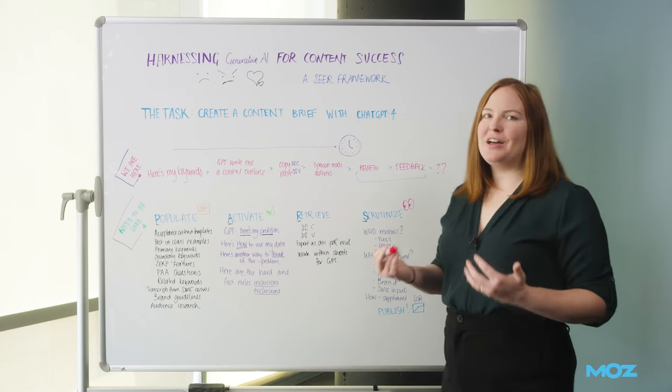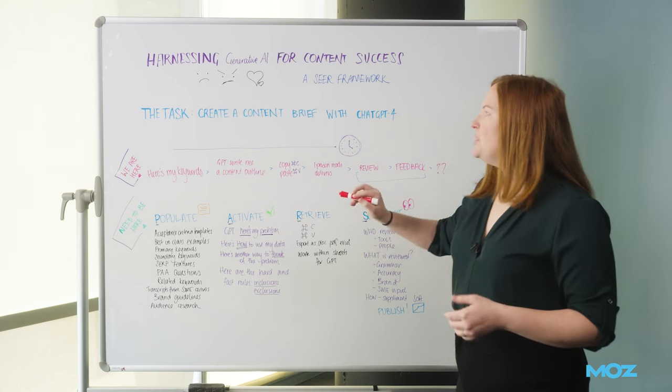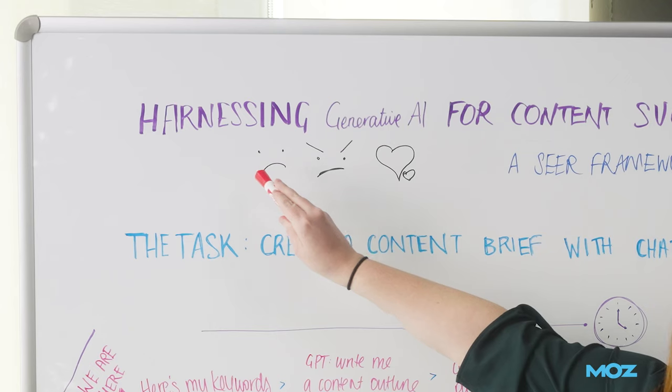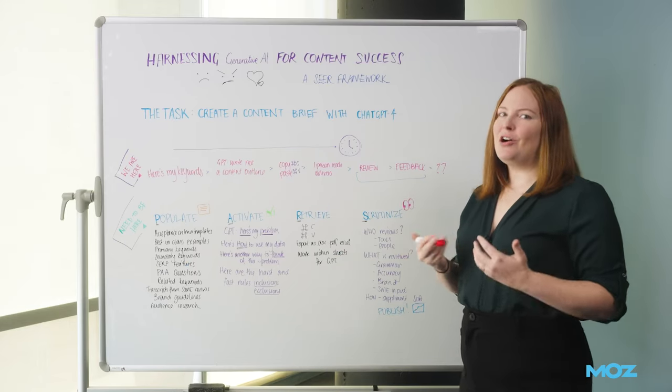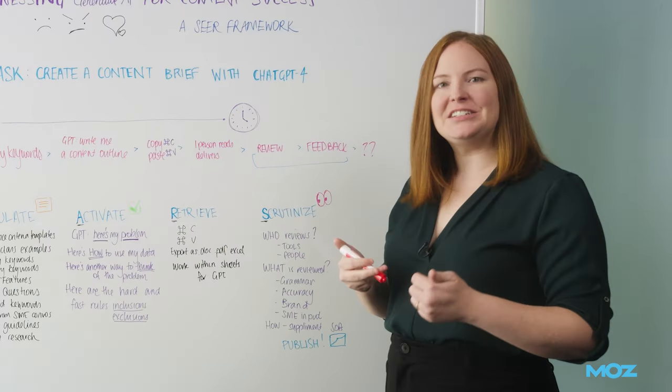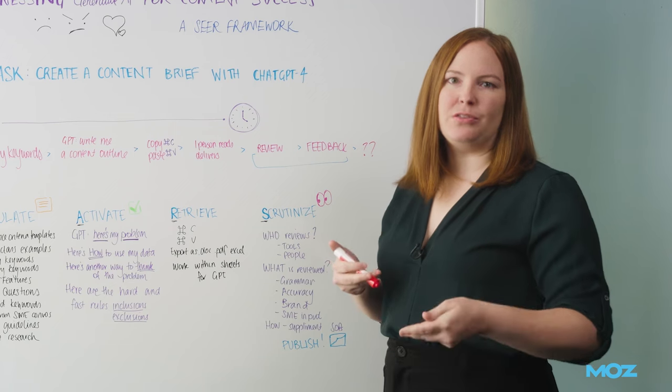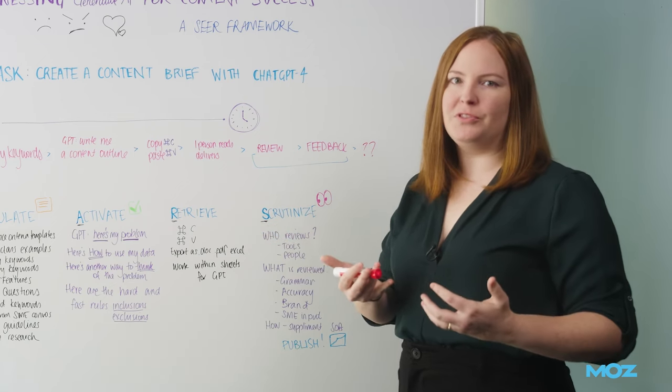We're talking to a lot of people at Seer, and people are feeling different ways about it. Some people are feeling really skeptical about it, and they're really worried that the outputs from generative AI aren't going to comply with EEAT principles. That's experience, expertise, authority, and trust. So how can a machine capture all of those principles?